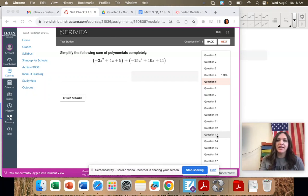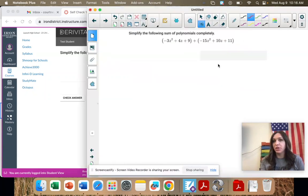Number five, we're simplifying, and we have one polynomial in parentheses plus another polynomial in parentheses. So I want you to make note, when you're adding, you just drop the parentheses. So I'm going to rewrite it without the parentheses.